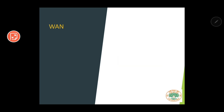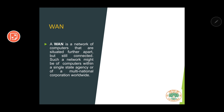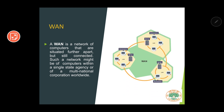The third type is WAN or Wide Area Network. A WAN is a network of computers situated further apart but still connected. Such a network might include computers within a single state agency or a multinational corporation worldwide. If you want to connect computers all over the world, it forms a WAN. The internet that you are using right now to watch this video is a part of WAN.